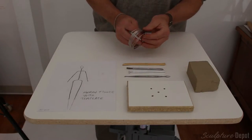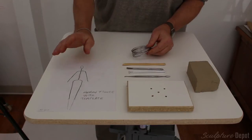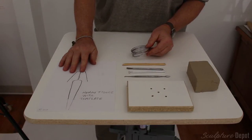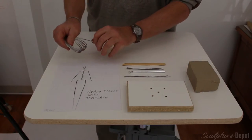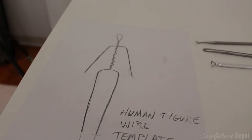It comes with five feet of aluminum wire to use as an armature. It comes with a human figure wire template so that you can pattern your wire around this.